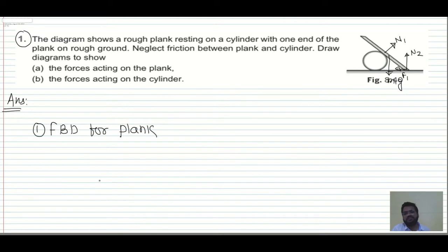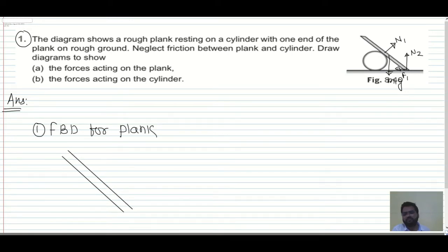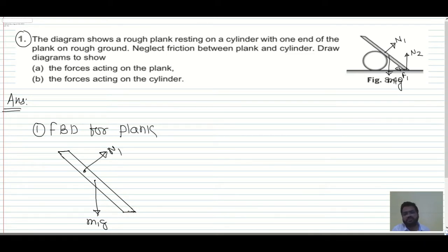So this is the plank which we have. We have M1G acting downward, then we have the normal reaction N1, then we have the normal reaction N2, and then we have the frictional force. So this is the free body diagram.